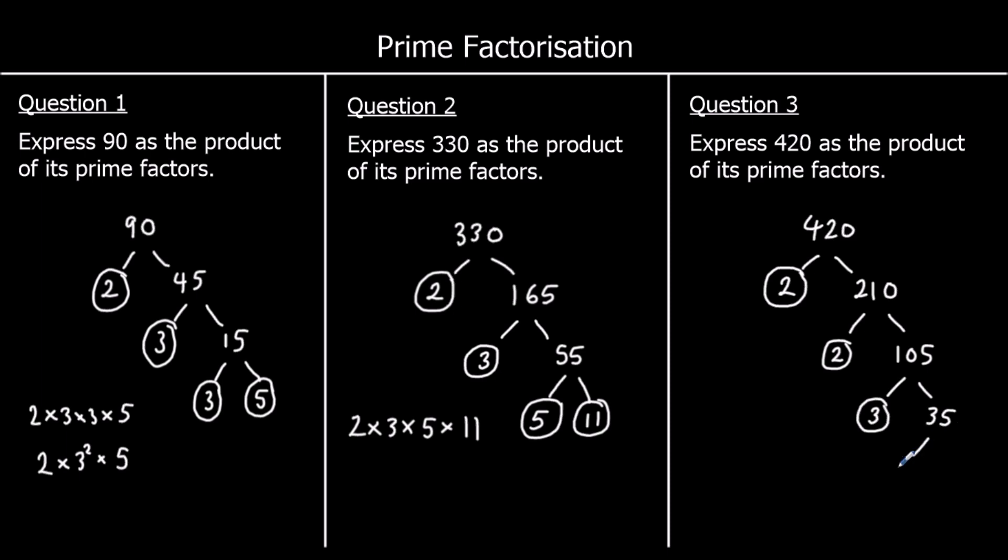Which is 5 times 7. So we've got 2 times 2 times 3 times 5 times 7, or 2 squared times 3 times 5 times 7.